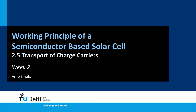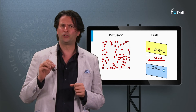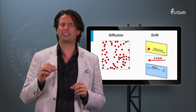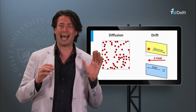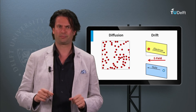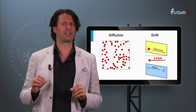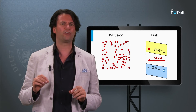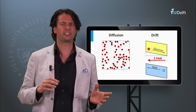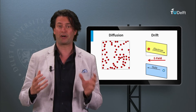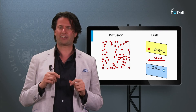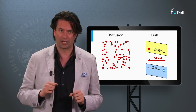What are the charge carrier transport principles? In this block the two transport mechanisms will be discussed: diffusion and drift. We will discuss that for net movement of charge carriers, either a concentration gradient or an electric field is required.